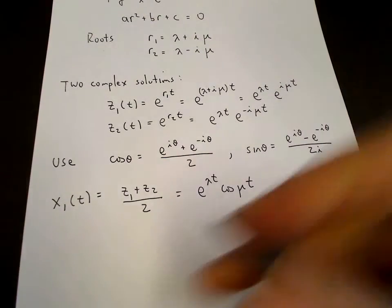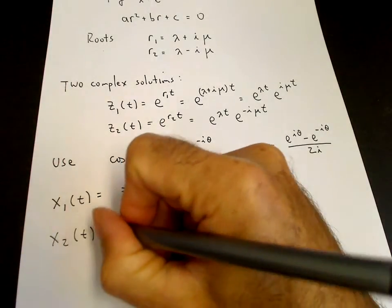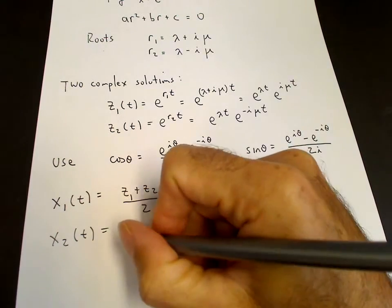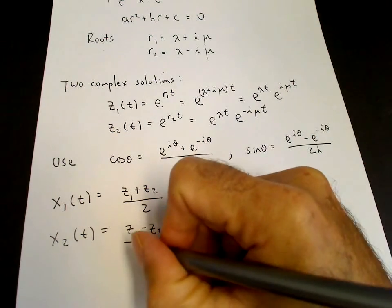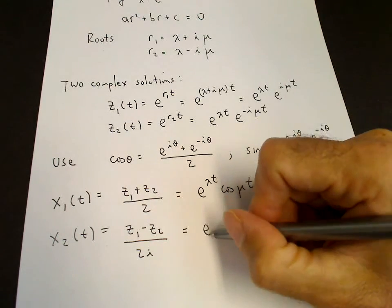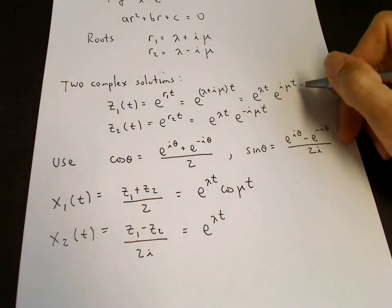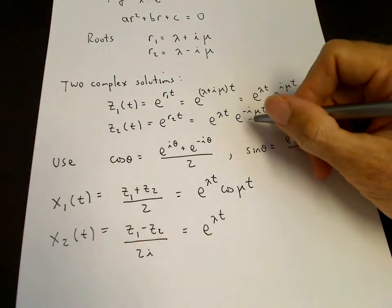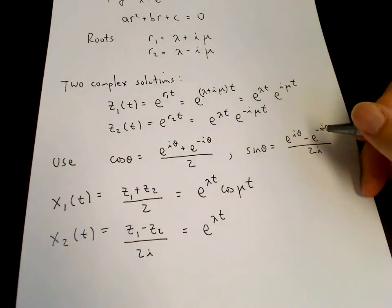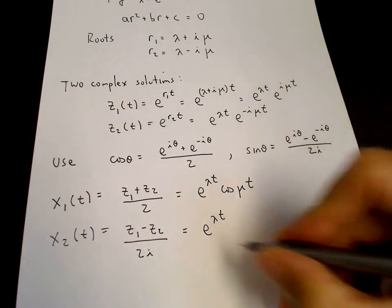Then we construct our second real solution x2 of t by taking the difference of z1 and z2 and dividing by 2i. The difference again has a common factor of e to the lambda t, then e to the i mu t minus e to the minus i mu t over 2i — with theta equal to mu t — which looks like a sine.